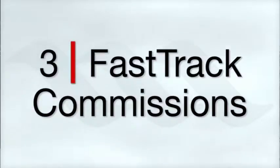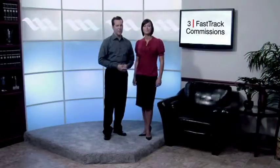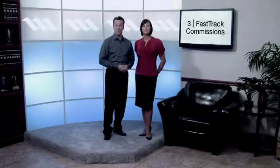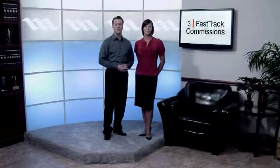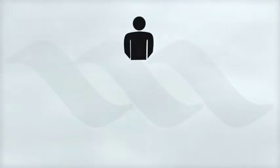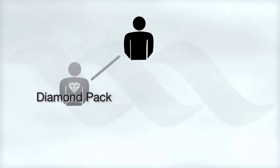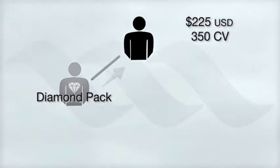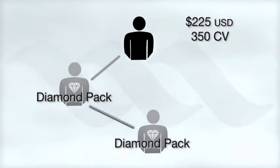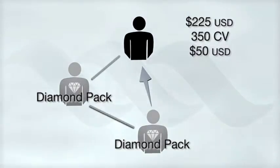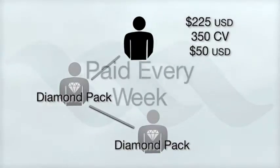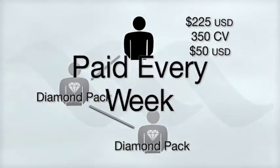Fast Track Commissions are designed to reward Active Associates who want to build a successful business. You receive commissions on every product pack purchased by those you personally enroll. Commissions are also paid to the sponsors of enrolling associates. Let's demonstrate your potential earnings if you enroll an associate who purchases a diamond pack for $899 US dollars. First, you receive $225 US dollars in Fast Track Commissions plus commissionable volume of $350. If the person you enrolled then sells a diamond pack to someone else, you receive $50 US dollars. Another important part of Fast Track Commissions, they're paid every week, providing you with immediate income.